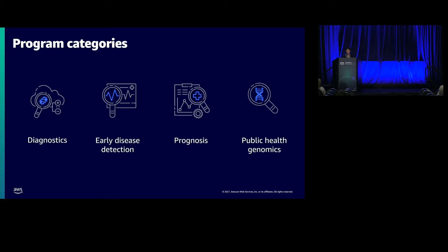Since we've entered phase two earlier this year, we've added three additional categories. One is early disease detection — some of the first signs of COVID like high fever, cough, and shortness of breath are not definitive, but how can we use those to warn someone to quarantine or go get a test? The next is prognosis — can we predict whether someone is likely to have an excellent outcome, or should we mobilize them to the ICU? And then finally, public health genomics.